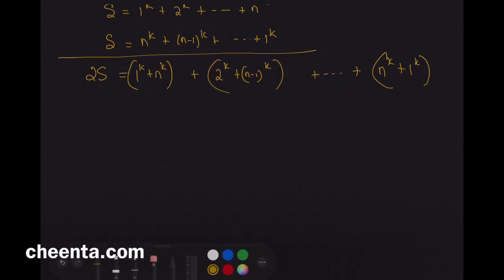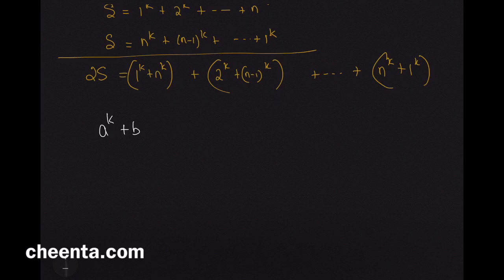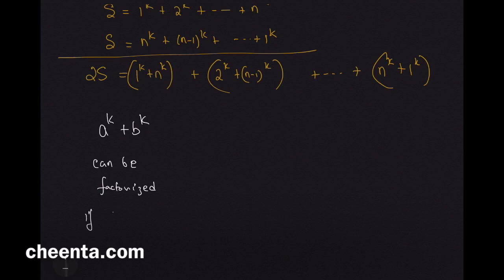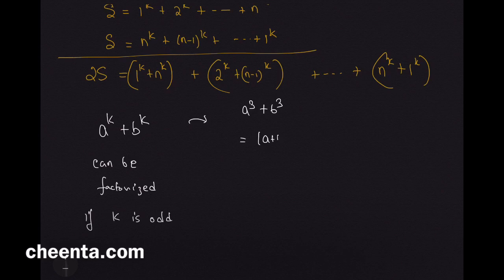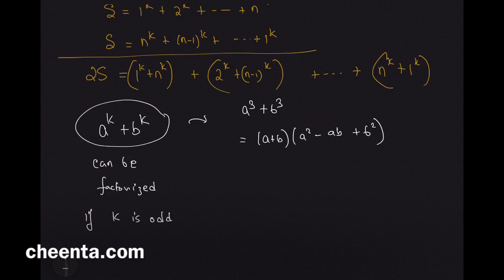Now there is a very nice formula that a to the power k plus b to the power k can be factorized if k is odd. One nice example of it. We all know this that a cube plus b cube is a plus b times a square minus ab plus b square. So we can actually factorize this.